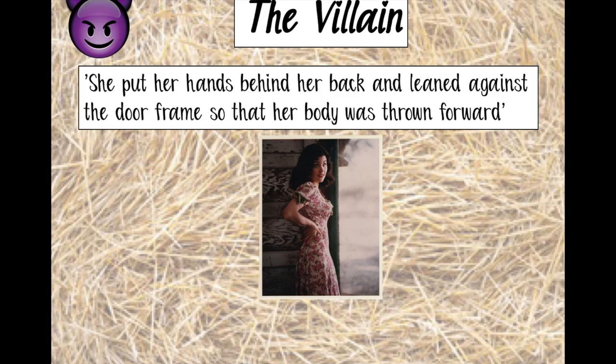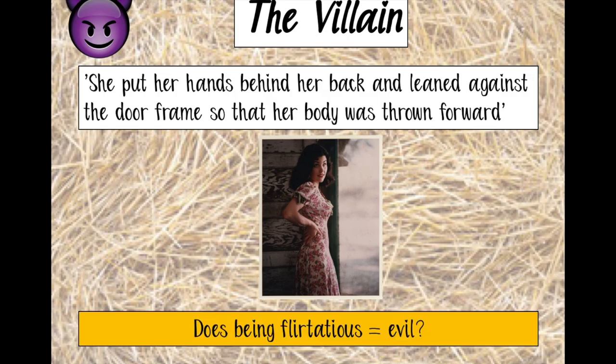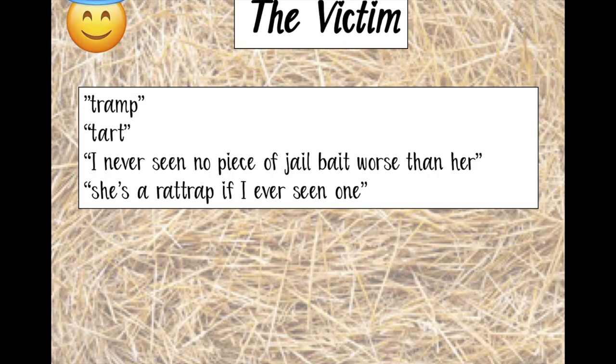However, we then have this flirtatious body language from her: 'She put her hands behind her back and leaned against the doorframe so her body was thrown forward.' So we've got this idea she's showing off her body. But again, maybe she is being flirtatious — does that make her super evil? Does she deserve all the insults thrown at her? Tramp, tart, jailbait, rat trap — horrible words used as descriptors for Curly's wife throughout the text.